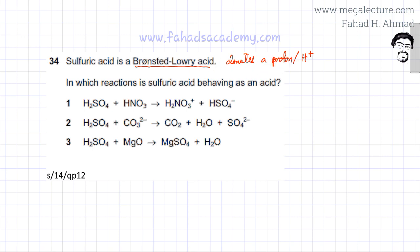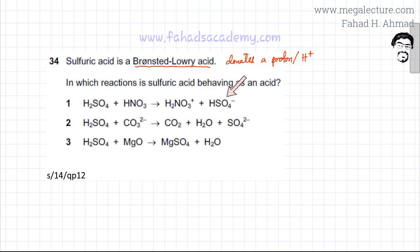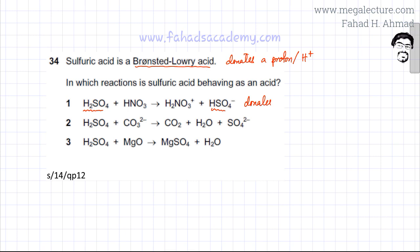We're going to look for those reactions in which sulfuric acid is donating an H⁺ ion. In the first reaction, you have H₂SO₄, and on the other side you have HSO₄⁻. Going from H₂SO₄ to HSO₄⁻ means that it has lost, or donated, an H⁺ ion. So option 1 is correct.